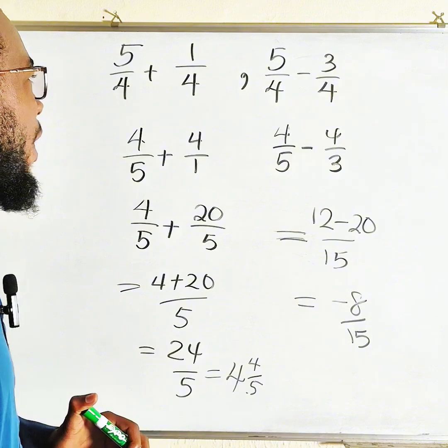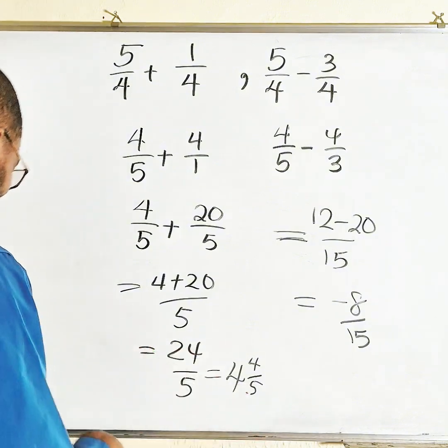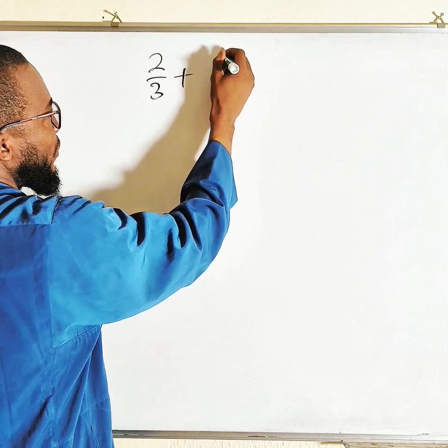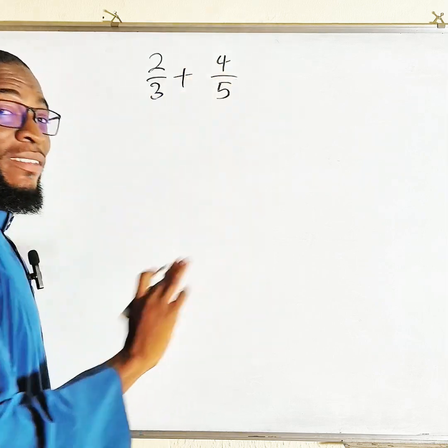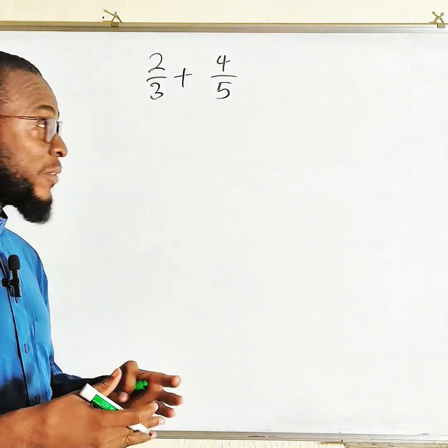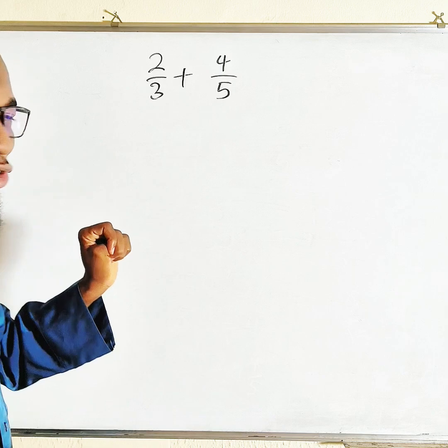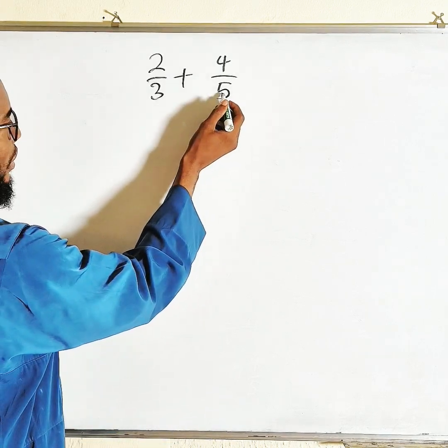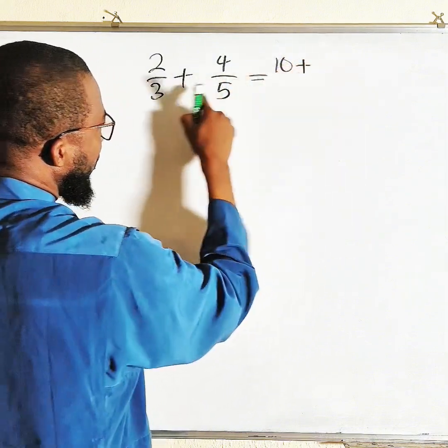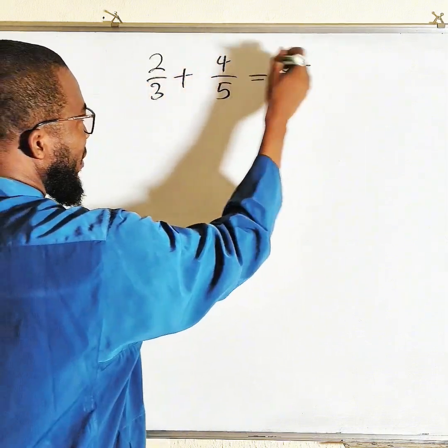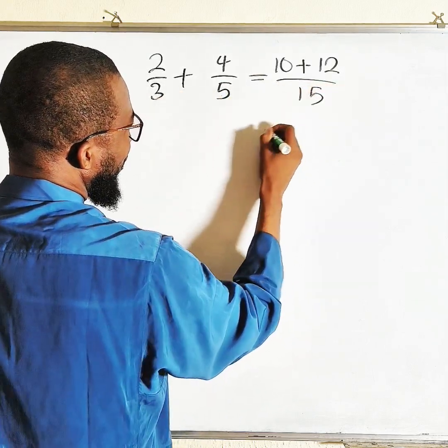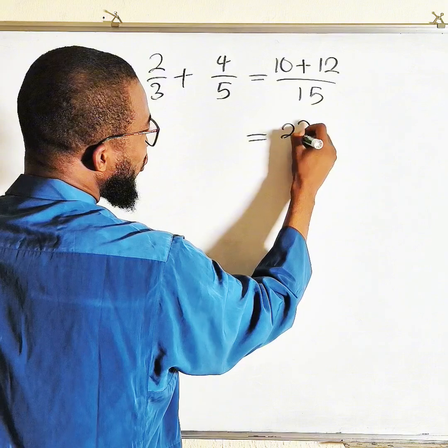Then lastly is a situation whereby everything is entirely different. For example, 2/3 plus 4/5—everything entirely different. You can make the denominator the same by applying equivalent fractions, but this time around I'm going to show you the bow-tie method. This will give us 10, plus this time 12, divided by the base which is 15. This is equal to 22 on top, 15 on the bottom.